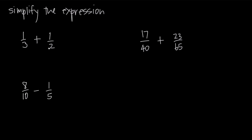So how do we go about finding a common denominator, or a denominator that's going to be equal? What we do is we look for the lowest common multiple of the two denominators. Our denominators are 3 and 2, so we need to find the lowest common multiple of 3 and 2. When you have small numbers like this, finding the lowest common multiple is easiest by looking at the larger of the two numbers. 3 is larger than 2, so we're going to look at the multiples of 3.